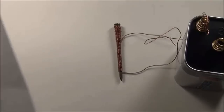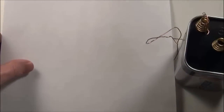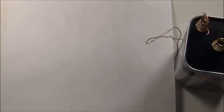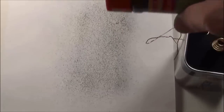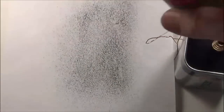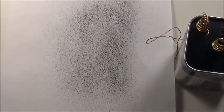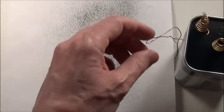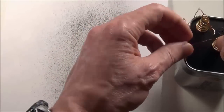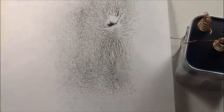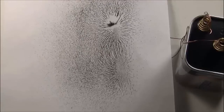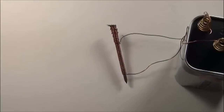Here we have a nail with copper wire wrapped around it. One end is connected to the battery; the other end is not yet connected. We're going to sprinkle some iron filings on top of the paper here, and we really don't see much happening. But if we connect that wire to the battery, electricity will flow, and you can see that as soon as electricity starts flowing, we form a magnetic field. You can see the two poles very clearly on that nail.